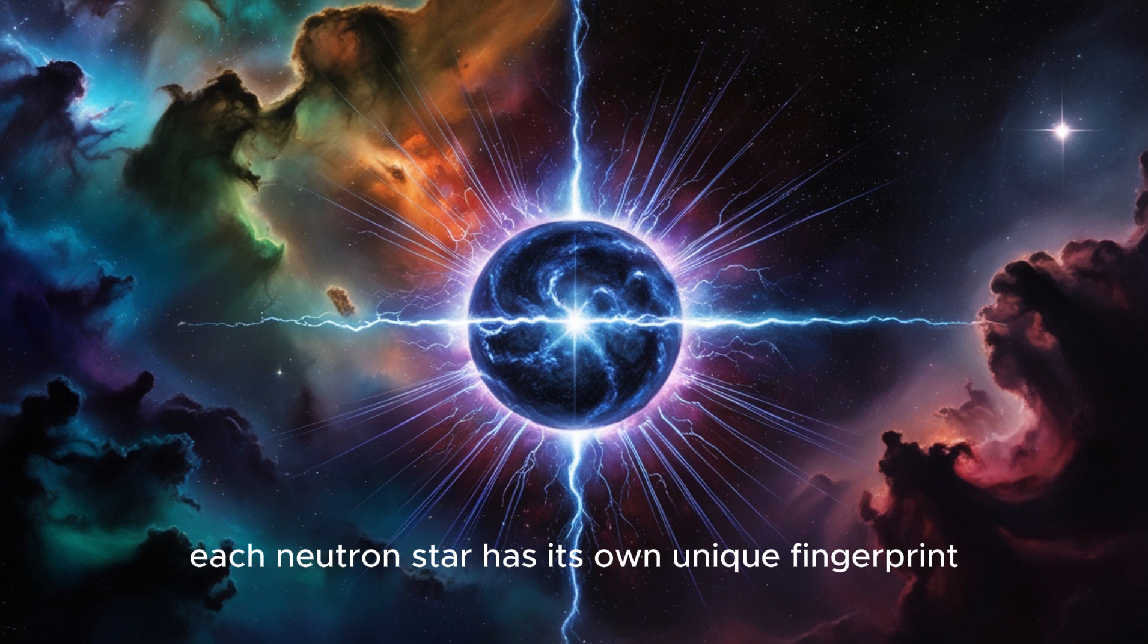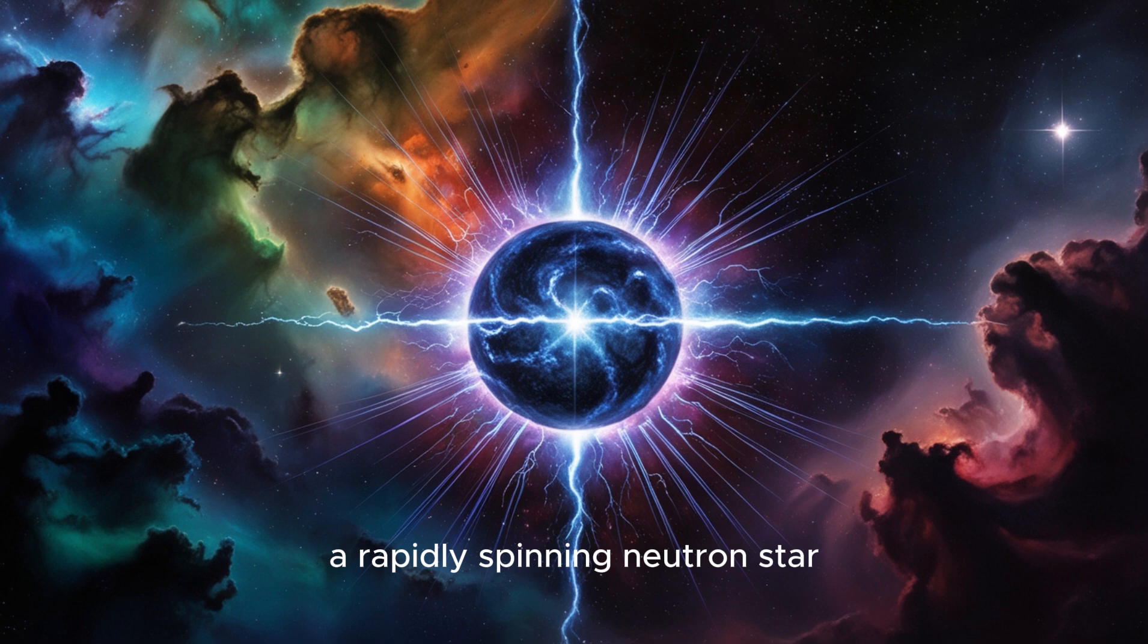That's another area where we're still piecing together the puzzle. It likely comes down to a combination of factors: the original star's mass, its spin rate, the strength and configuration of its magnetic field. It's like each neutron star has its own unique fingerprint. So depending on those initial conditions, a neutron star gets sorted into a specific category—kind of like a cosmic sorting hat.